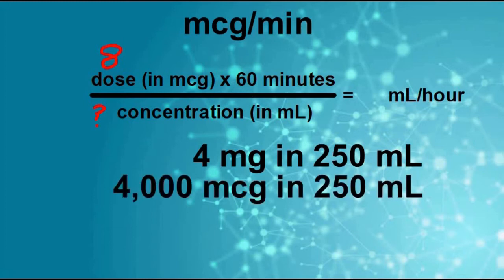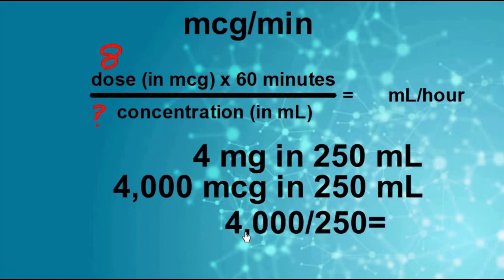Four milligrams is the same thing as saying 4,000 micrograms. So we have 4,000 micrograms in 250 milliliters. 4,000 divided by 250 equals, I'll give you a second to do the math, 16. So our concentration is 16 micrograms per milliliter.